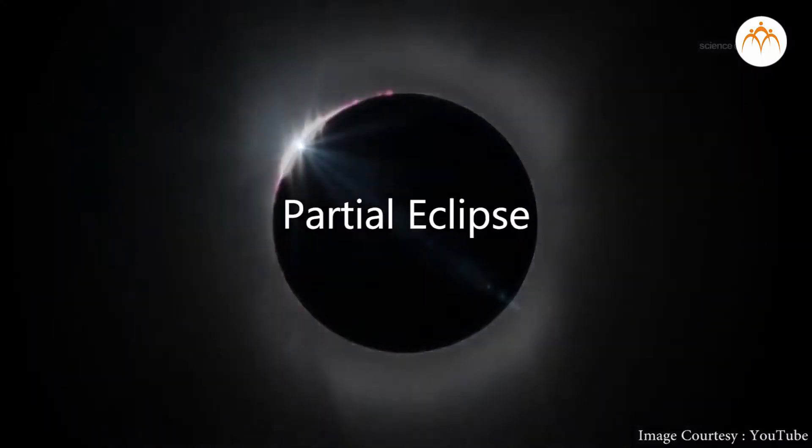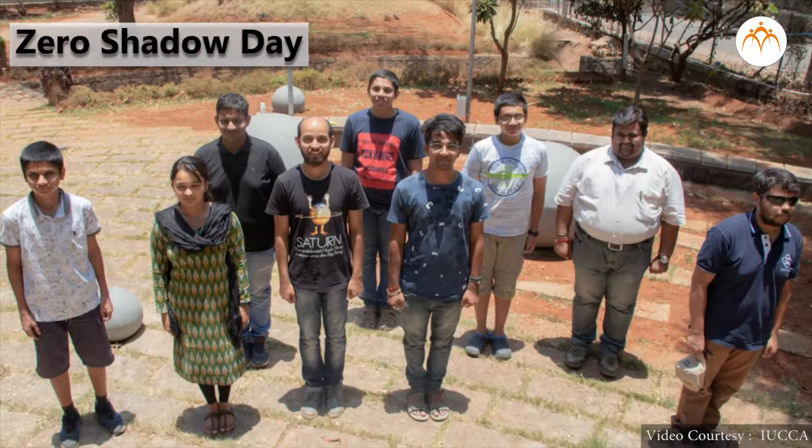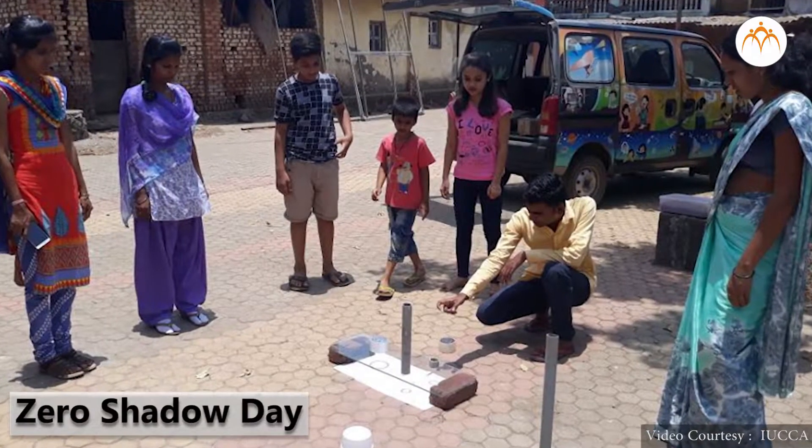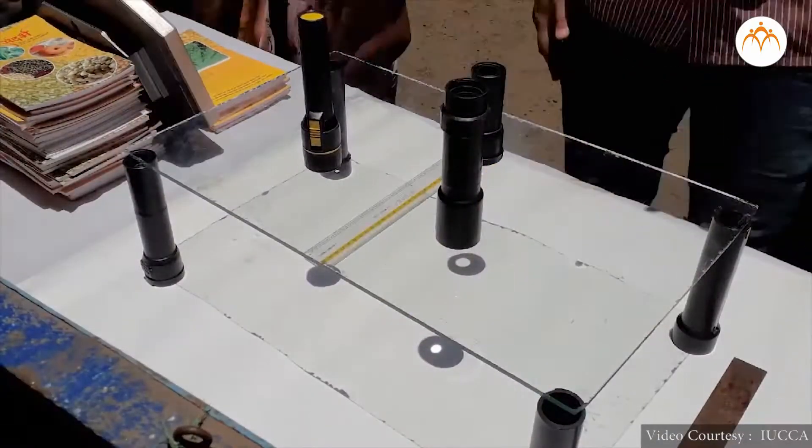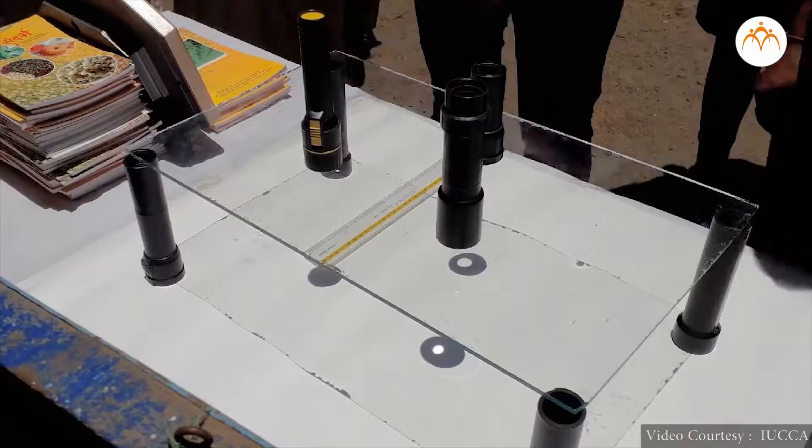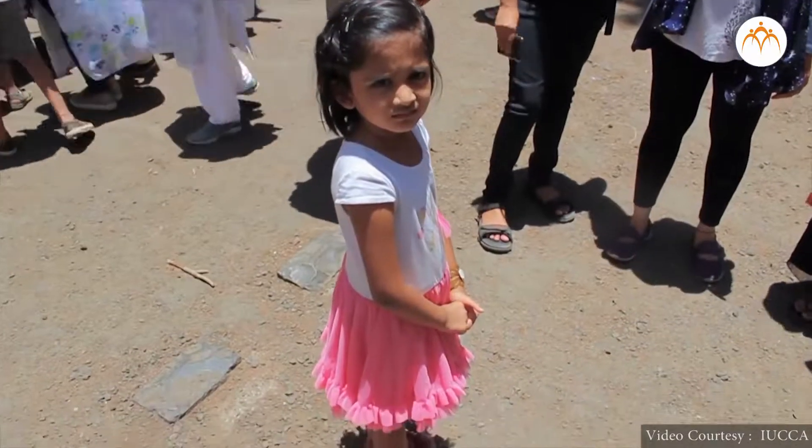We understood how umbra and penumbra play a role in total and partial eclipse. Zero shadow day is another event which occurs twice a year in certain parts of the Earth. Zero shadow is a phenomenon when the sun is exactly overhead and the shadows of symmetrical and vertical objects vanish.